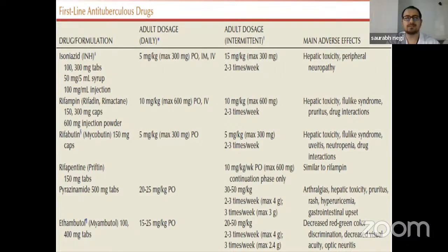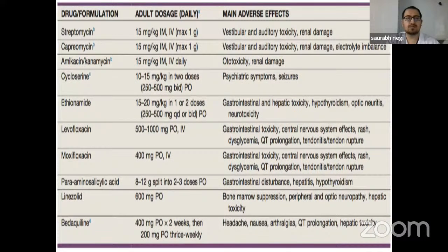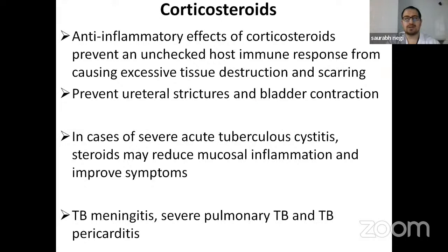Second-line drugs for tuberculosis include streptomycin, capreomycin, amikacin, cycloserine, ethionamide, levofloxacin, moxifloxacin, para-aminosalicylic acid, and linezolid. Corticosteroids, due to their anti-inflammatory effect, can prevent unchecked host immune response and are used to prevent excessive tissue restriction, scarring, ureteral strictures, and bladder contraction. They are generally used in severe cases of tubercular cystitis to reduce mucosal inflammation and improve symptoms. Corticosteroids are also used in TB meningitis, severe pulmonary TB, and TB pericarditis.